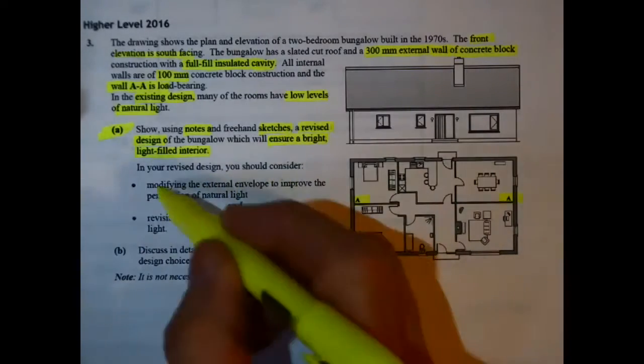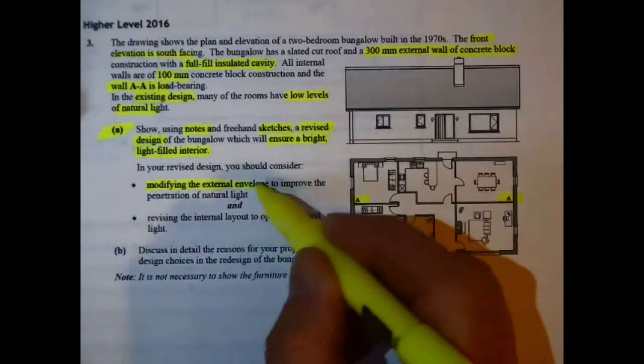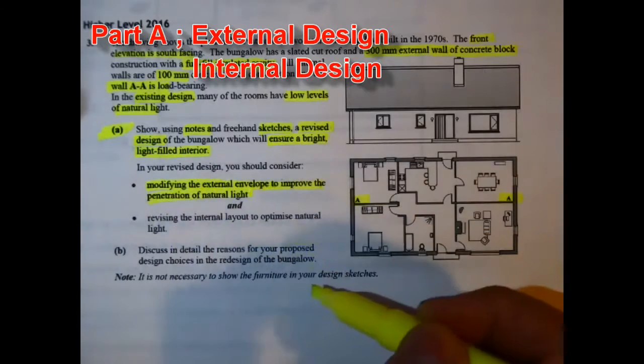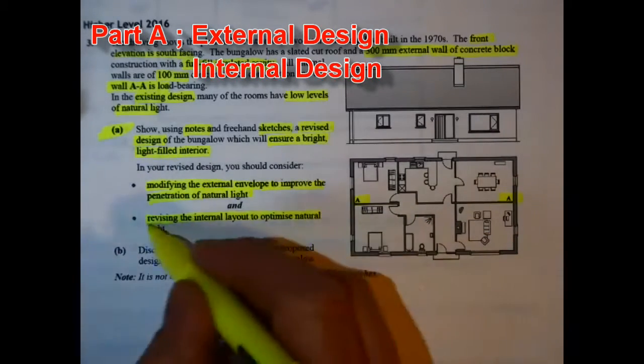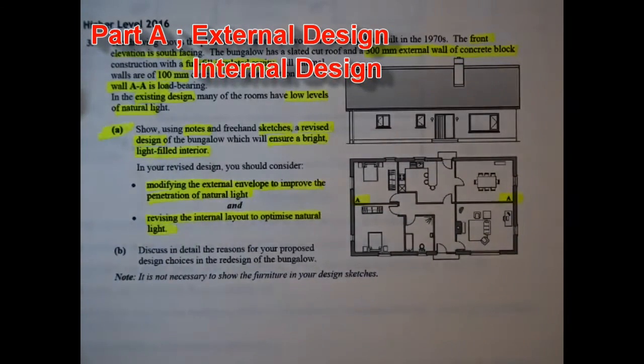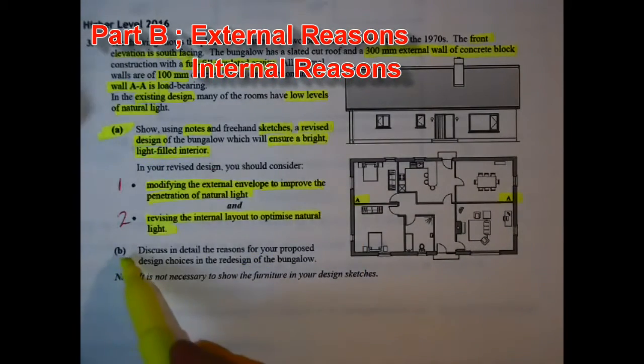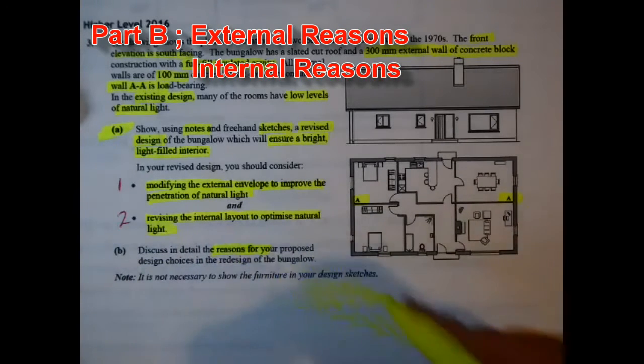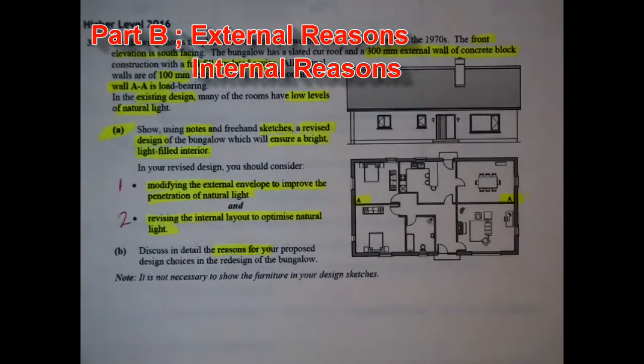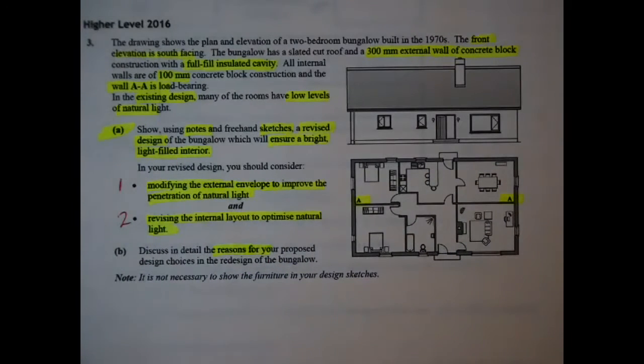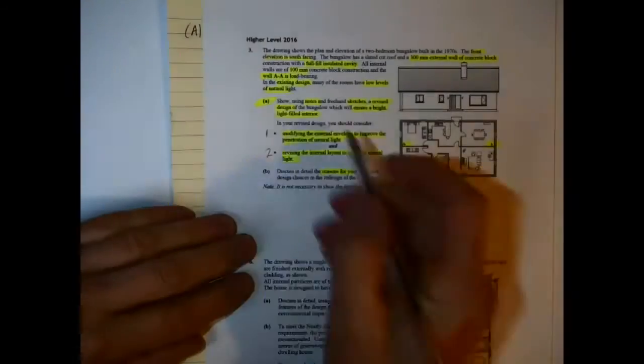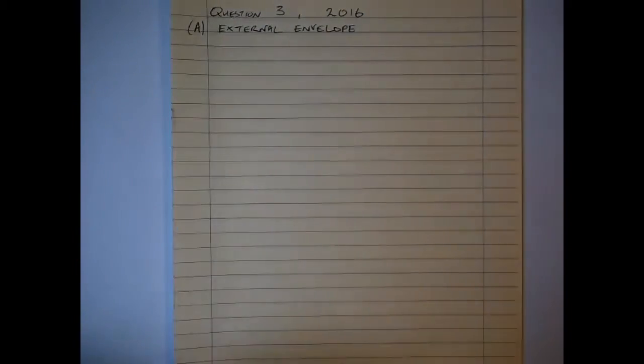So you have to revise this design. You want to modify the external envelope here as the first bullet point, and then you want to revise the internal layout. So there's two things: external design and internal layout. Then Part B of the question focuses on the reasons. So you divide that up again - external reasons and internal reasons. Very important when you're answering the question to remember exactly what they're asking. That's key to this here.